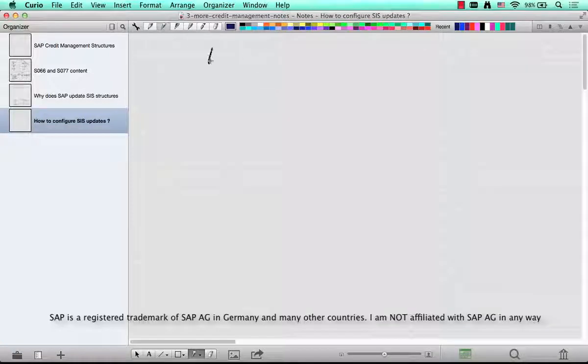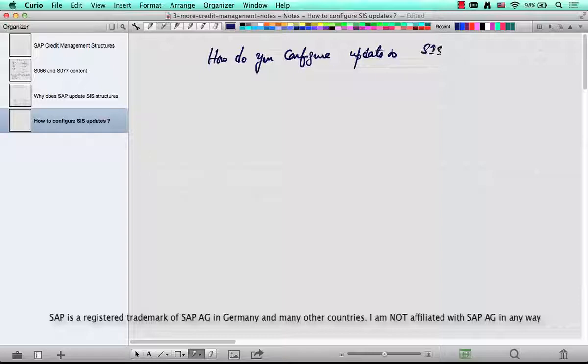So the next question is, how do you configure updates to SIS or LIS structures? The answer is statistics group.